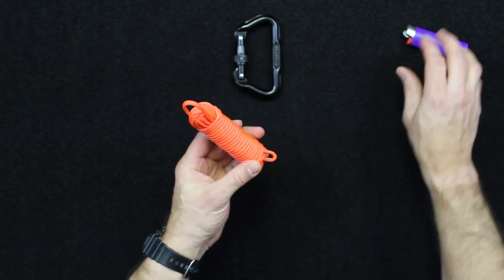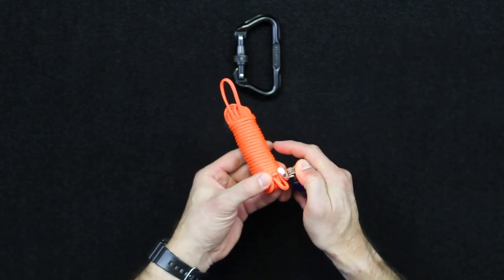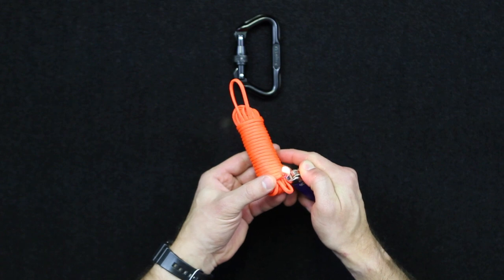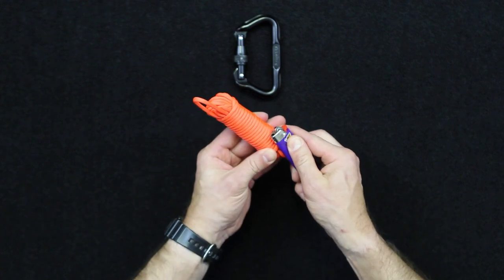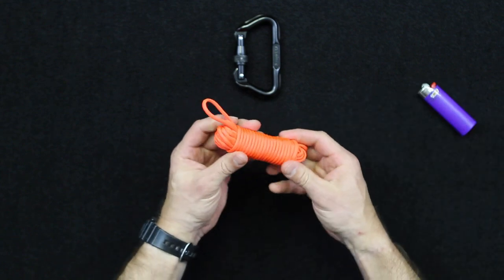And then for extra security, you could go ahead and fuse the end of this here. I'll just wait until it gets hot. Then press that into the paracord, kind of fusing that down again.